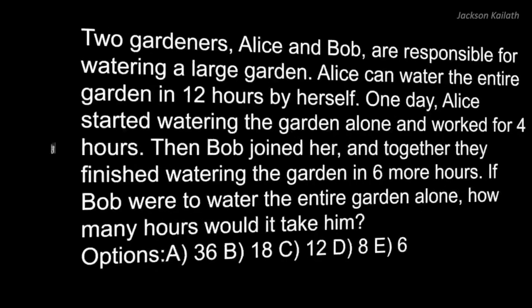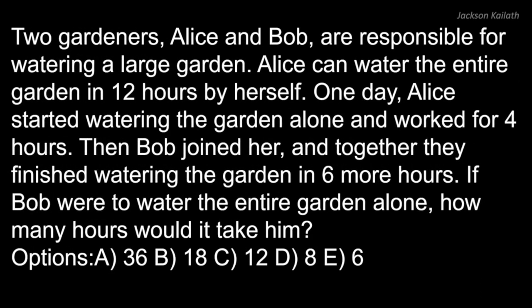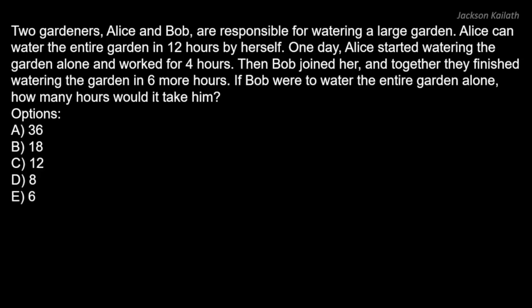Let's get started with the first question. You have the first question on your screen — try to solve it on your own. Two gardeners Alice and Bob are responsible for watering a large garden. Alice can water the entire garden in 12 hours by herself. One day Alice started watering the garden alone and worked for four hours. Then Bob joined her and together they finished watering the garden in six more hours. If Bob were to water the entire garden alone, how many hours would it take him?